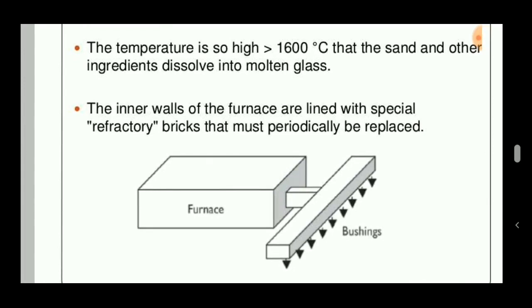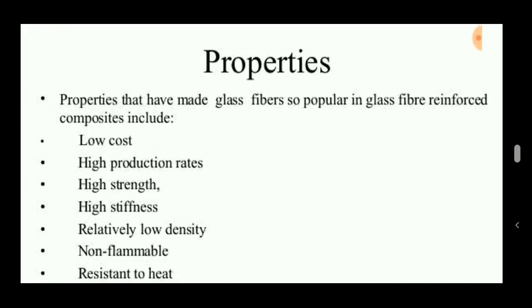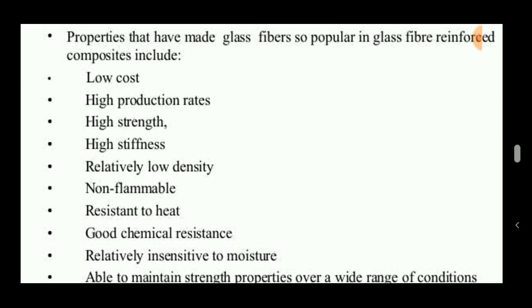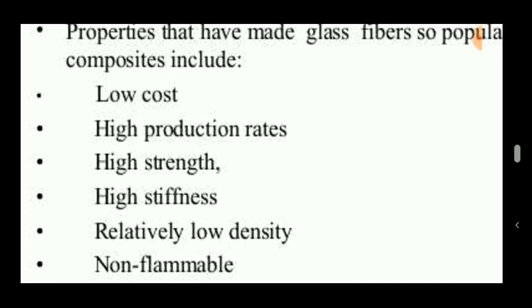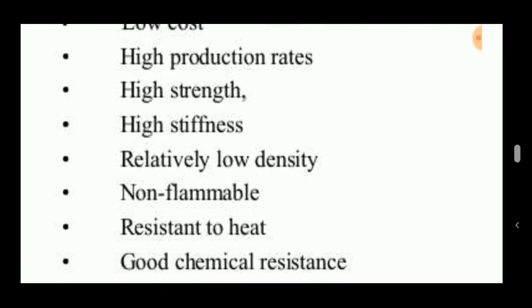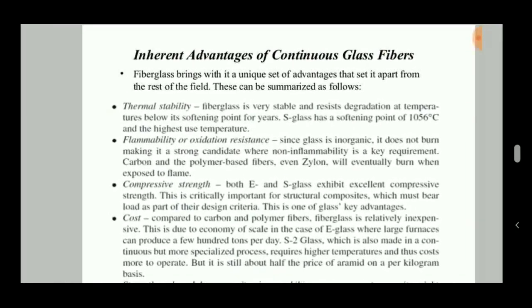The furnace is a critical part, operating above 1600 degrees Celsius, and its inner walls are lined with refractory bricks to withstand the high heat. The properties obtained from glass fiber include low cost, high production rate, high strength, high stiffness, low density, non-flammability, resistance to heat, good chemical resistance, and thermal stability.